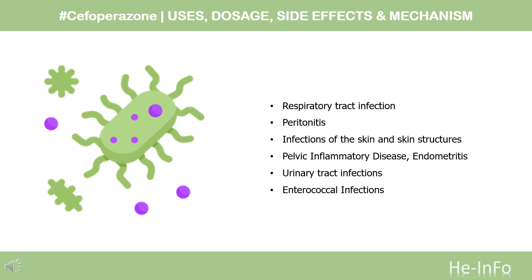2. Peritonitis and other intra-abdominal infections caused by E. coli, P. aeruginosa, and anaerobic gram-negative bacilli, including Bacteroides fragilis. 3. Bacterial septicemia caused by S. pneumoniae, S. agalactiae, S. aureus, Pseudomonas aeruginosa, E. coli, Klebsiella spp., Klebsiella pneumoniae, Proteus species (indole-positive and indole-negative), Clostridium spp., and anaerobic gram-positive cocci.